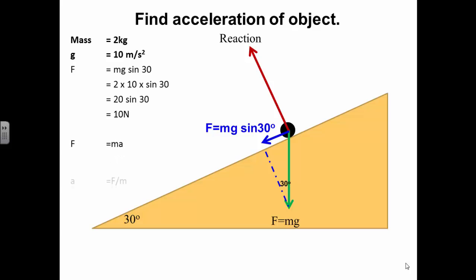Rearrange to find the acceleration. Substitute the values, and we have an acceleration of 5 meters per second squared. Easy peasy, lemon squeezy.